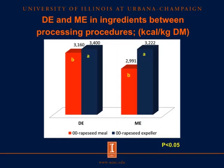For digestible energy and metabolizable energy in rapeseed products from different oil extraction procedures — again, orange represents double-zero rapeseed meal from solvent extraction and blue represents double-zero rapeseed expellers from expeller extraction — digestible energy in double-zero rapeseed meal and double-zero rapeseed expellers were 3,160 and 3,400 kcal/kg, respectively. Metabolizable energy were 2,991 and 3,222 kcal/kg, respectively. Digestible energy and metabolizable energy were greater in double-zero rapeseed expellers than in double-zero rapeseed meal from solvent extraction.